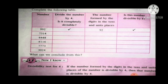Next, 7314. The number formed by units and tens place is 14. 14 is not divisible by 4, so 7314 is not divisible by 4. Next, 6448. 48 is divisible by 4, so 6448 is divisible by 4. Next, 8116 — the number formed by tens and units place is 16. 16 is divisible by 4, so 8116 is divisible by 4.